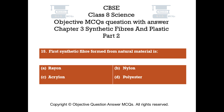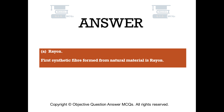Question number 15. The first synthetic fiber formed from natural material is: Option A - rayon, Option B - nylon, Option C - acrylic, Option D - polyester. The right answer is Option A, rayon. The first synthetic fiber formed from natural material is rayon.